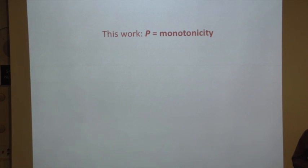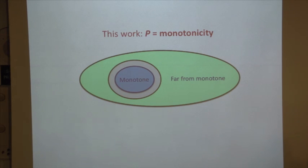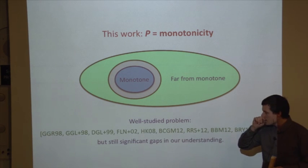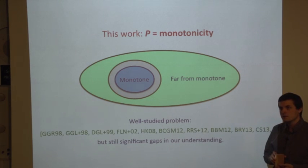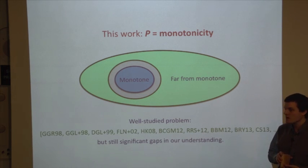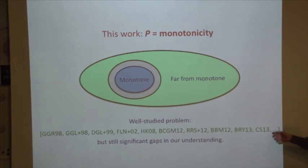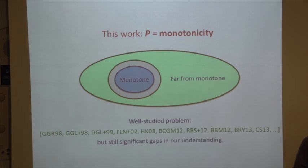The property we'll be talking about throughout this work is monotonicity — the class of all monotone Boolean functions. We're interested in telling whether an unknown function is monotone versus far from monotone. This is a problem that's been studied quite a bit. The first work was by Goldreich, Goldwasser, and Ron. There was a subsequent stream of results up until just last year, when Chakrabarty and Seshadhri had a nice advance, but we still don't really know the answer to how many queries we need.